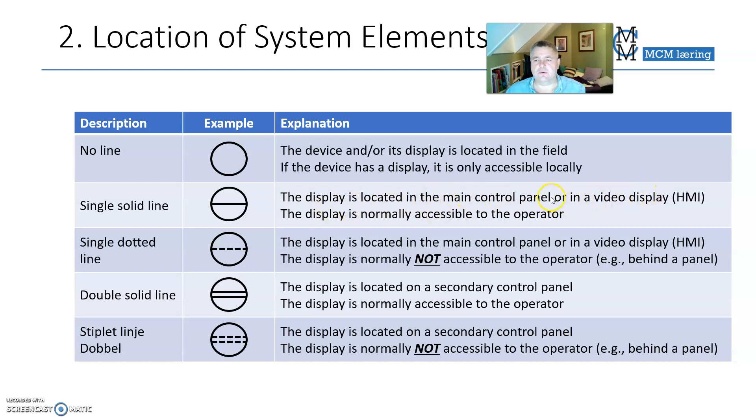Or maybe in this video display in that control room. If it's a dotted line, it means that it's normally not accessible to the operator. It could be behind the panel, for example, so it's not meant to be seen all the time. That's what a dotted line illustrates.